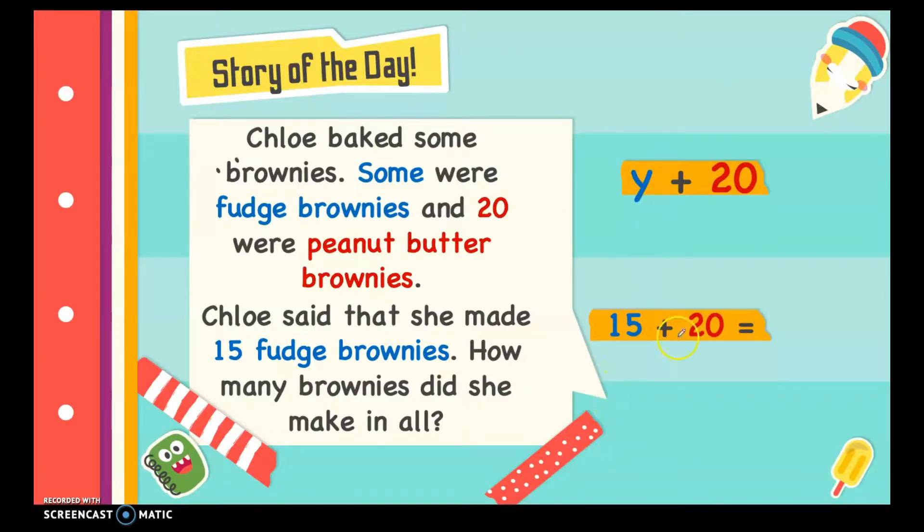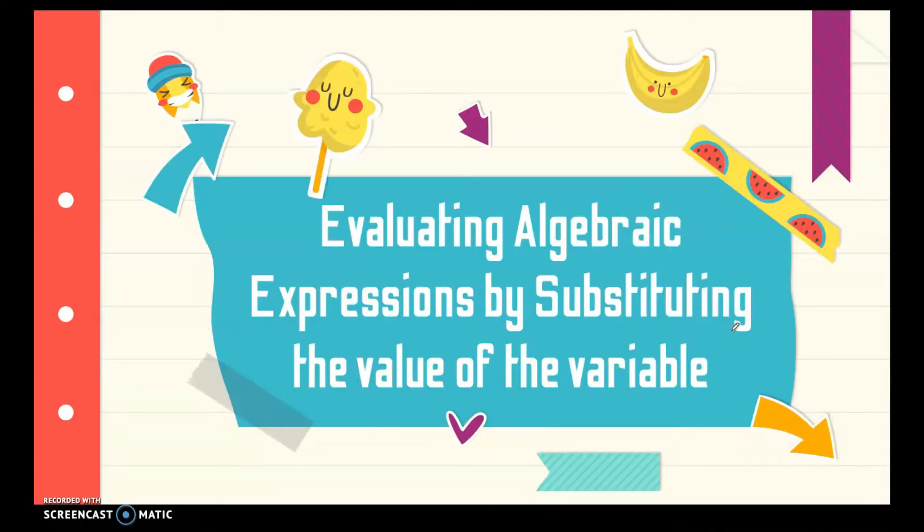We have here 15 plus 20 is equal to 35. This method of evaluating algebraic expressions is called substitution, and that is our topic for today.